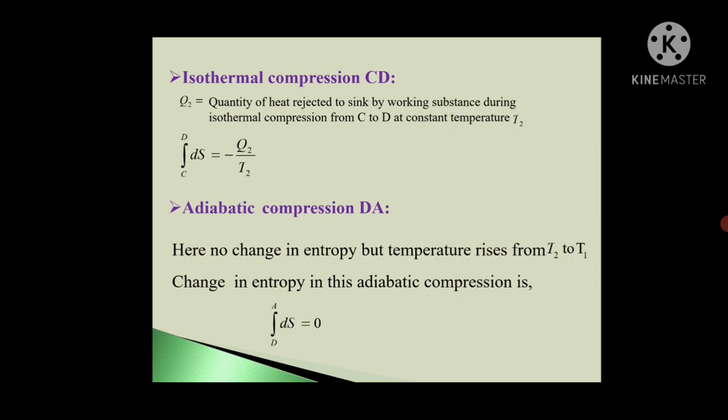Now Adiabatic Compression, D to A, first step of this cycle. Here also there will be no change in entropy because Adiabatic Compression, again no heat can enter the system, no heat can leave the system, but temperature rises. As it is Adiabatic Compression, temperature will rise from T2 to T1. So change in entropy in this case is given by integration D to A, dS is zero.